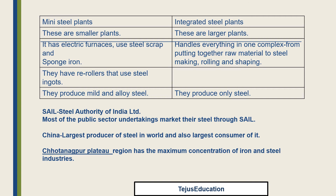Mini steel plants have re-rollers that use steel ingots to shape the metal into sheets. A steel ingot is a mass of metal cast into various shapes and sizes, used for construction. Mini plants produce milder alloy steel — alloy steel includes other elements like manganese and nickel. An integrated steel plant, by contrast, produces only steel, is larger in size, and handles everything in one complex — from raw material to steel making, rolling, and shaping.